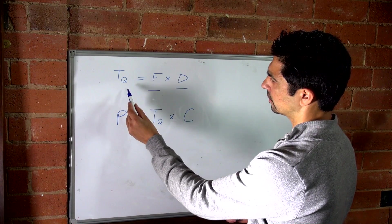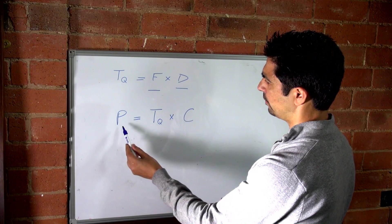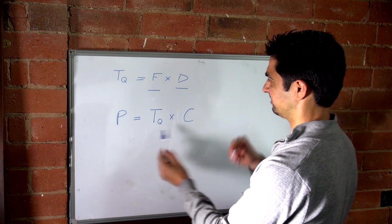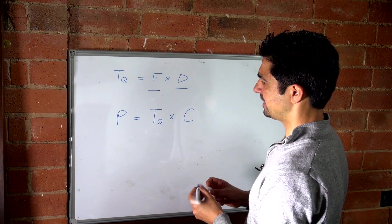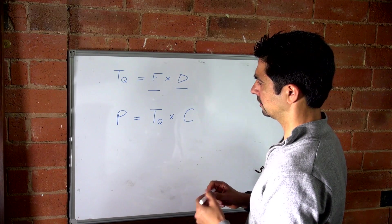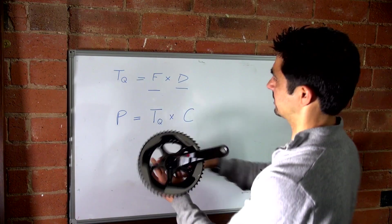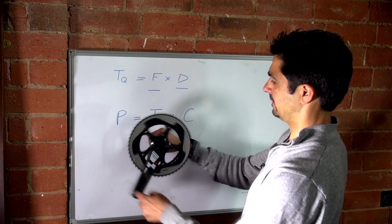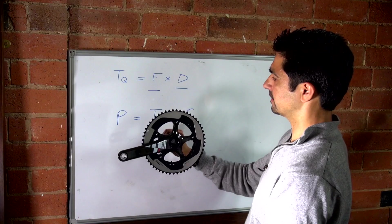But if your torque stays the same, and the power was the same, but the crank length changes, let's say the crank length gets longer, then your cadence must increase, because the distance around the axis is longer. So your cadence would have to be faster to make up for it.